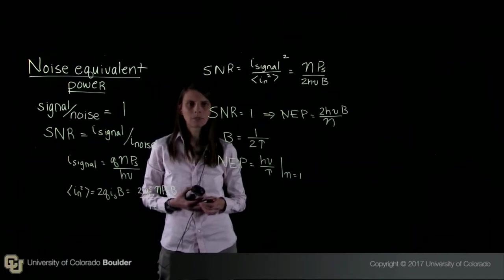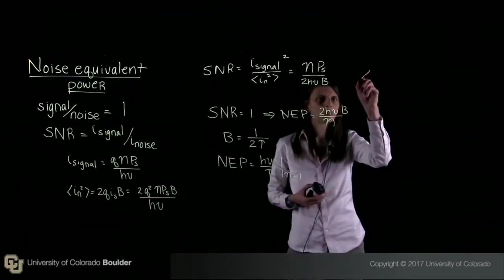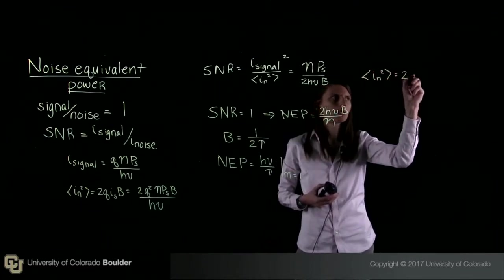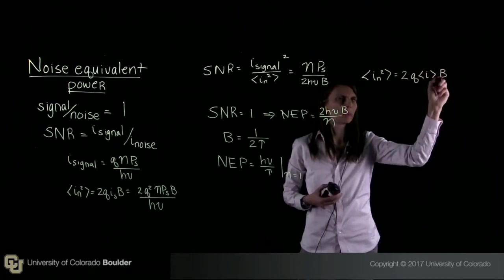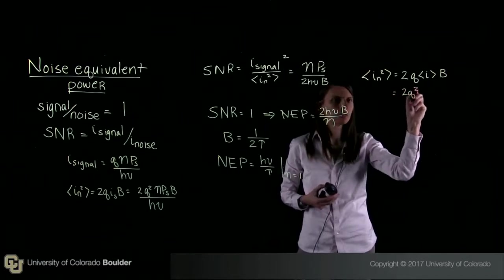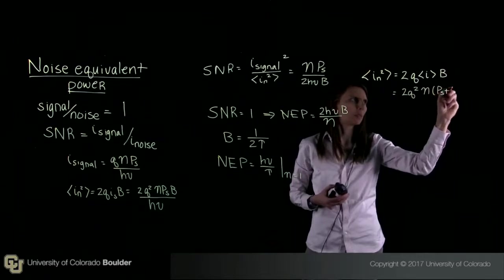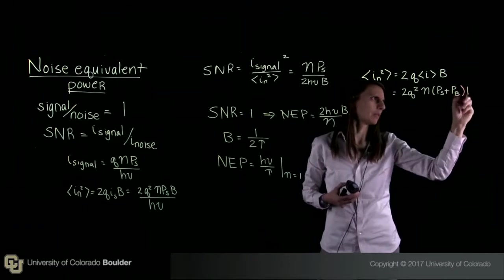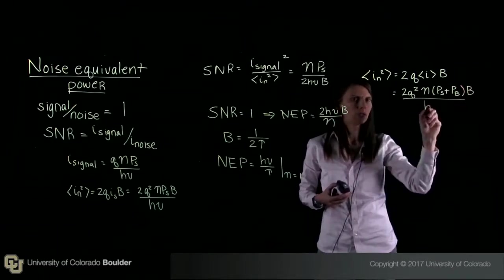So we can write down an expression for the noise. We can write that IN squared equals 2Q average value of I times bandwidth. And so this is equal to 2Q squared eta. And then here I'm going to write P signal plus P background. And this is multiplied by the bandwidth B over H nu.